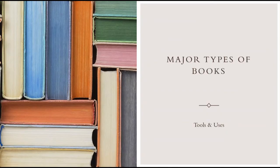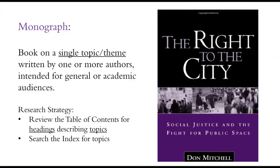Now let's consider some major types of books. First, there is the monograph. This is a book on a single topic or theme written by one or more authors and intended for a general or academic audience. The research strategy here is to review the table of contents for the headings describing the topics covered in the book to see if it will be relevant for the purposes of your assignment, and you can search the index for more detail on those topics and the page numbers where they can be found. So you don't necessarily need to read the entire book in order to include information from it for your research paper.